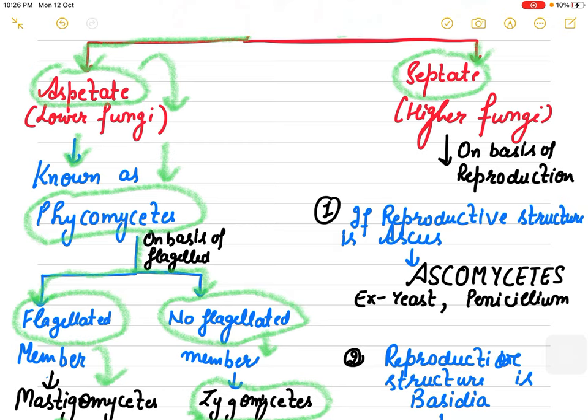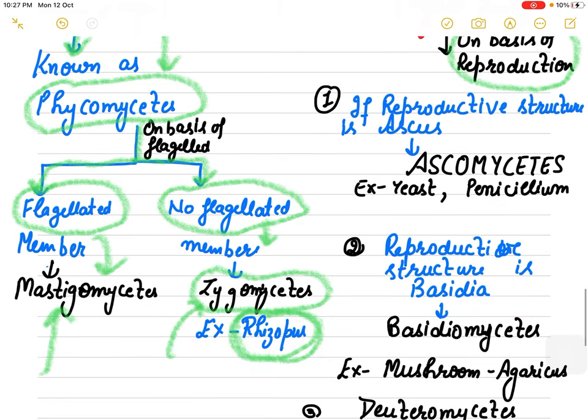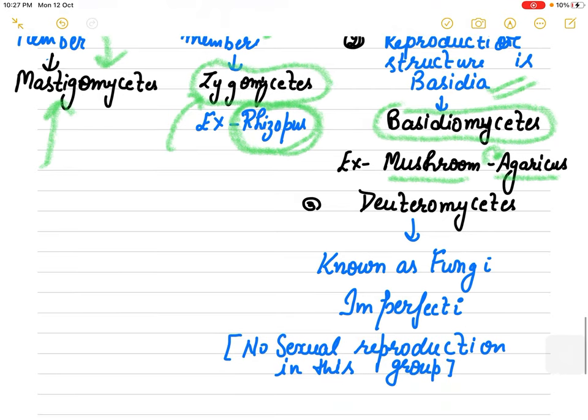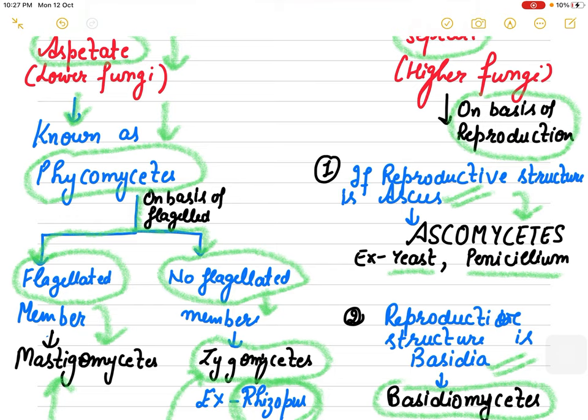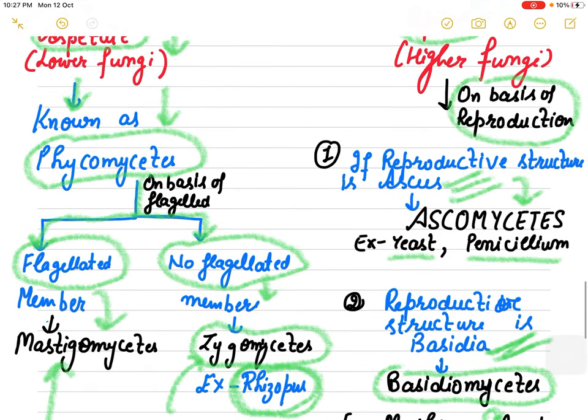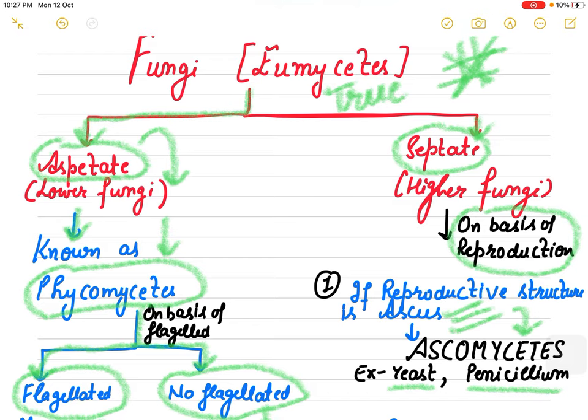Now comes to the higher fungi group. It is further divided on the basis of reproduction. If the reproductive structure is ascus, the group of fungi is known as Ascomycetes. Yeast and Penicillium are Ascomycetes. If reproductive structure is basidia it is known as Basidiomycetes. Mushroom, Agaricus - that is the Basidiomycetes. Then there is Deuteromycetes, which is known as fungi imperfecti because there is no sexual reproduction in this group. So on the basis of reproductive structure, higher fungi can be Ascomycetes, Basidiomycetes, or Deuteromycetes groups we have to discuss in detail and that I will take in my next lecture.